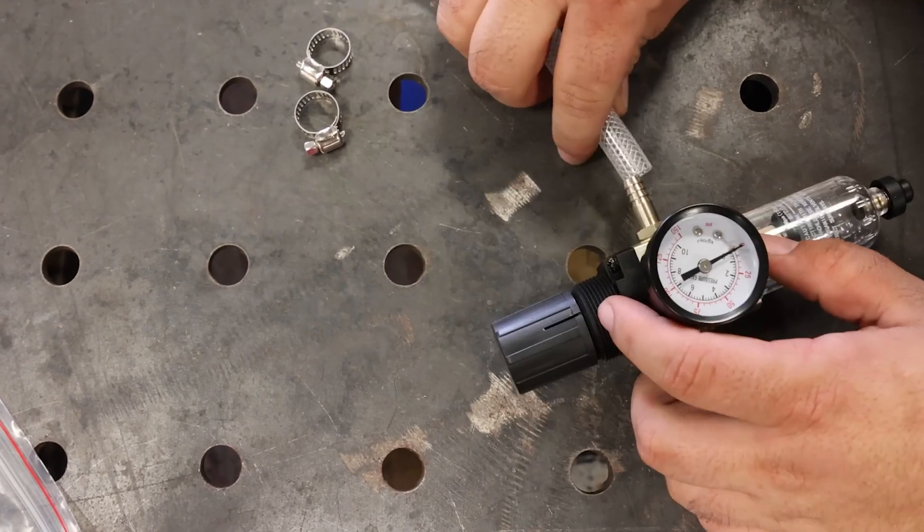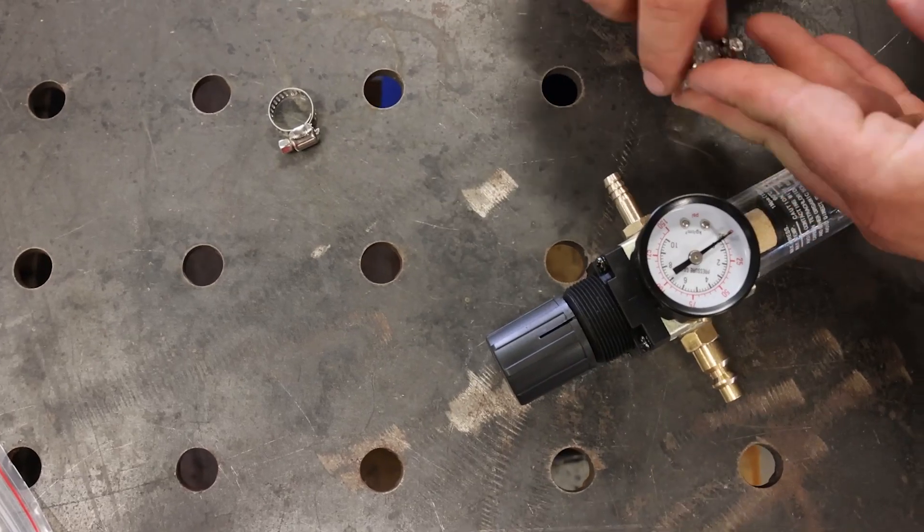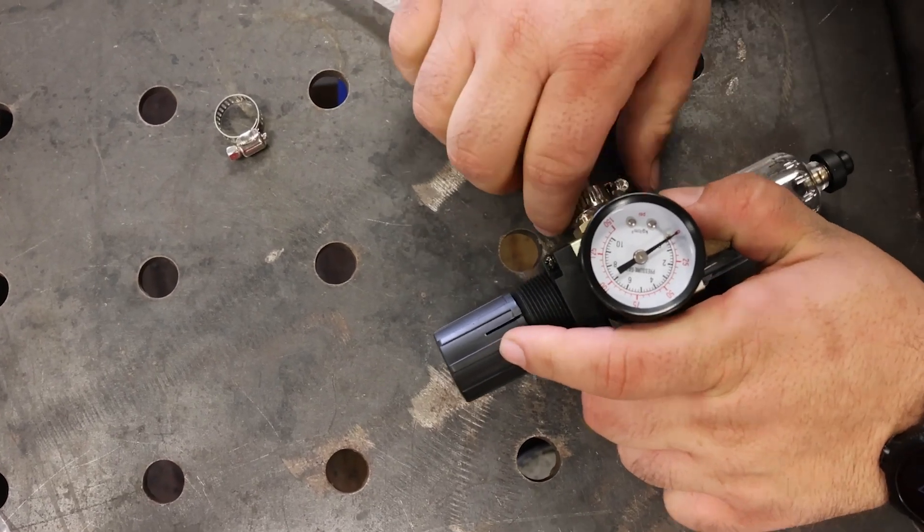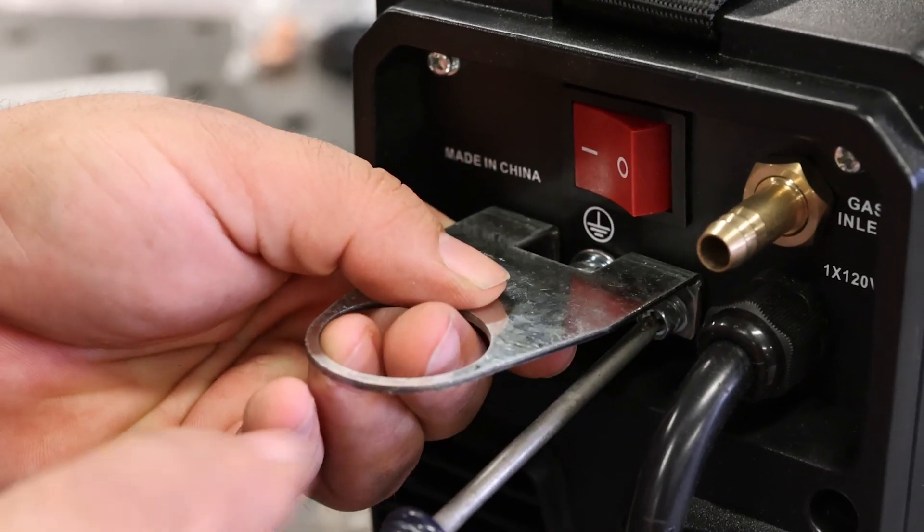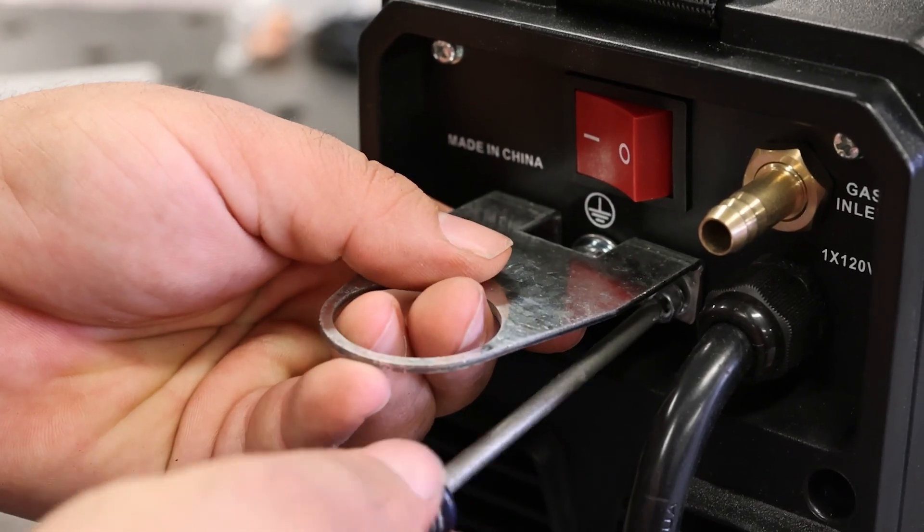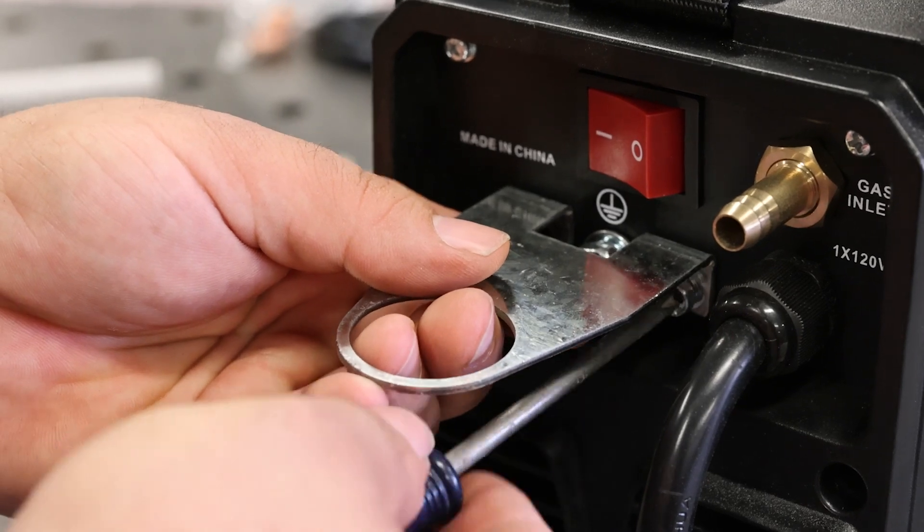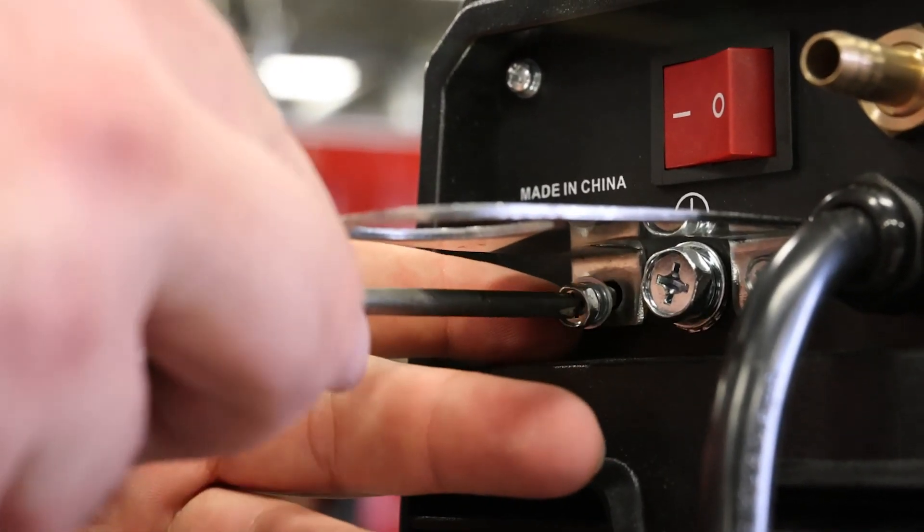Now that I got it all together, let's tighten the hose clamp up on the regulator and then we'll mount up the regulator to the machine. I'm going to mount the bracket for the regulator on the backside here. It comes with two machine screws and there's two threaded ports on the backside for it.